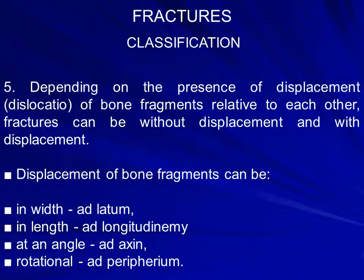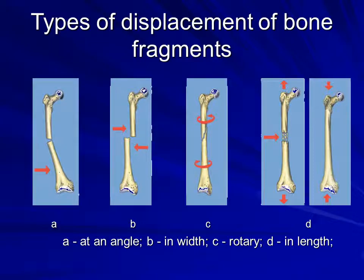Depending on the presence of bone fragment displacement, fractures can be without displacement or with displacement. Displacement of bone fragments can be: in width (ad latum), in length longitudinally, at an angle (ad axin), and rotational. The images show the types of bone fragment displacement: A — at an angle, B — in width, C — rotary, D — in length. Fractures can also be classified by the part of the bone affected: diaphyseal, metaphyseal, and epiphyseal — where epiphyseal fractures are almost equivalent to intra-articular fractures.